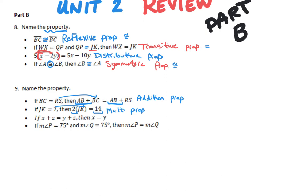If x plus z equals y plus z, then x must equal y. From the 'if' to the 'then,' something disappeared on both sides — the z vanished, meaning they subtracted z from both sides. So that one is the subtraction property.